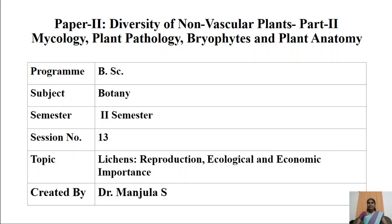Based on the substratum on which they grow, lichens are categorized into saxicolous, terricolous, corticolous, foliicolous, and muscicolous lichens. Based on external morphology they are categorized into crustose, foliose, and fruticose lichens. Based on internal structures, lichens are divided into two types: homoiomerous and heteromerous lichens.